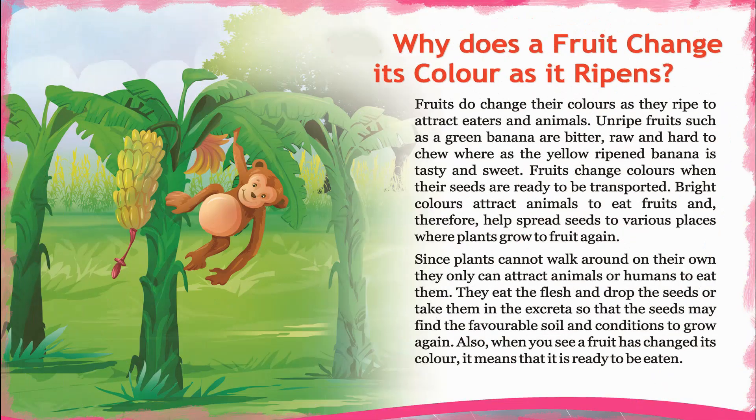Why does fruit change its color as it ripens? Fruits do change their colors as they ripen to attract eaters and animals. Unripe fruits, such as a green banana, are bitter, raw, and hard to chew, whereas the yellow ripened banana is tasty and sweet. Fruits change colors when their seeds are ready to be transported, as bright colors attract animals.